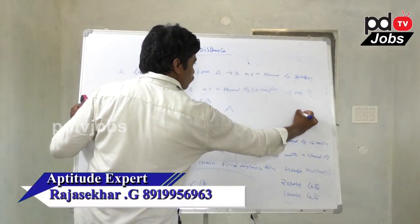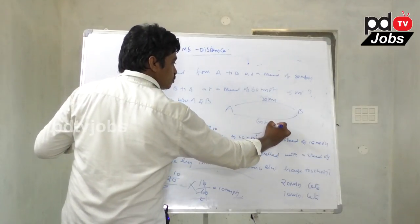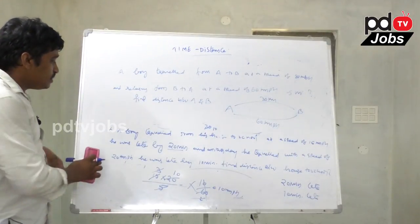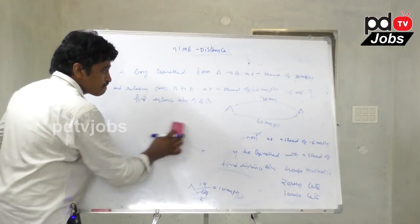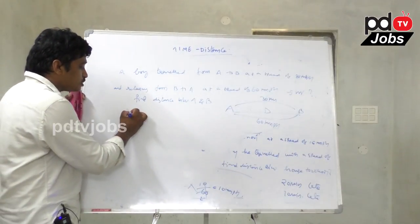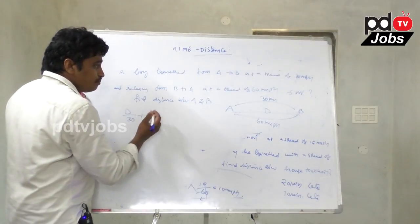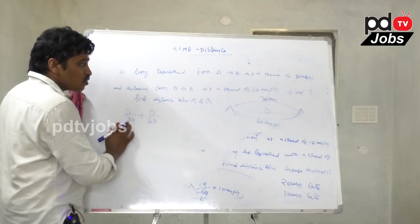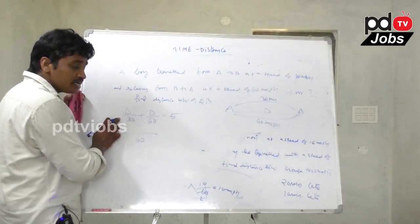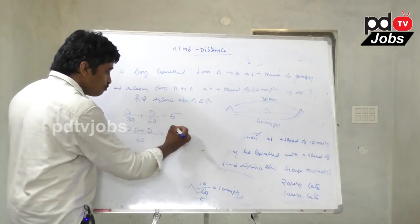Distance between A and B: distance divided by speed equals time. Distance/30 plus distance/60 equals total time of 5 hours. The LCM of 30 and 60 is 60. So 2D plus D over 60 equals 5.